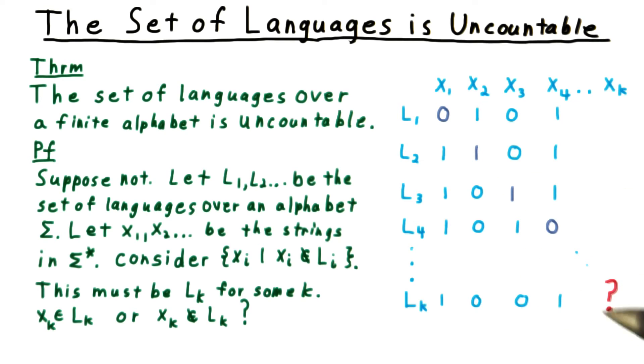But this diagonal entry can't be the opposite of itself. If xk is in Lk, then according to the rules for Lk, it should not be in Lk. On the other hand, if xk is not in Lk, then it should be in Lk.